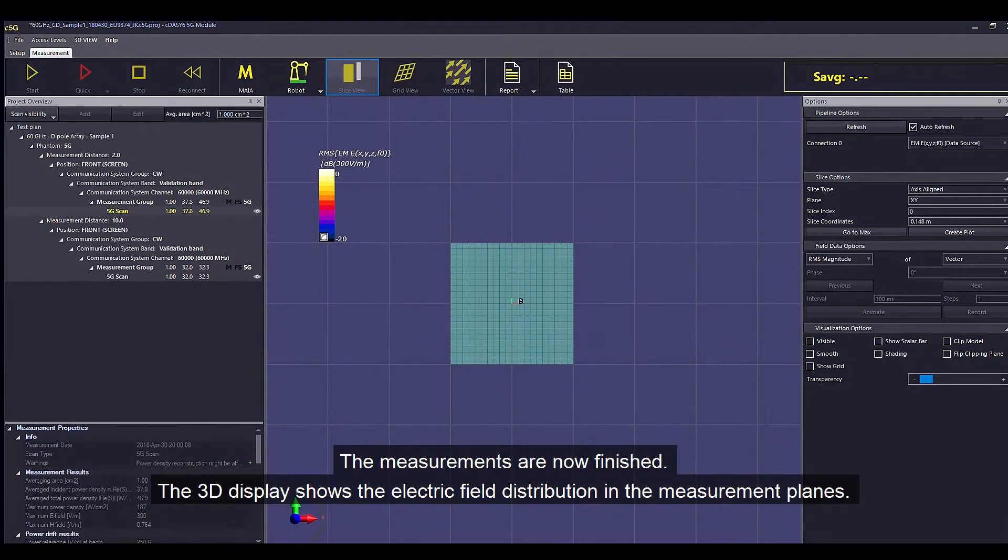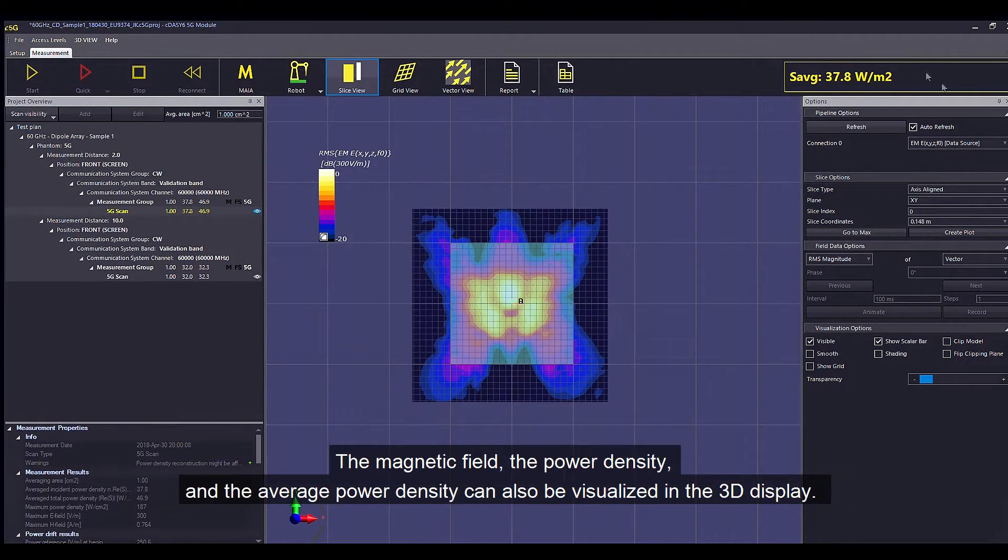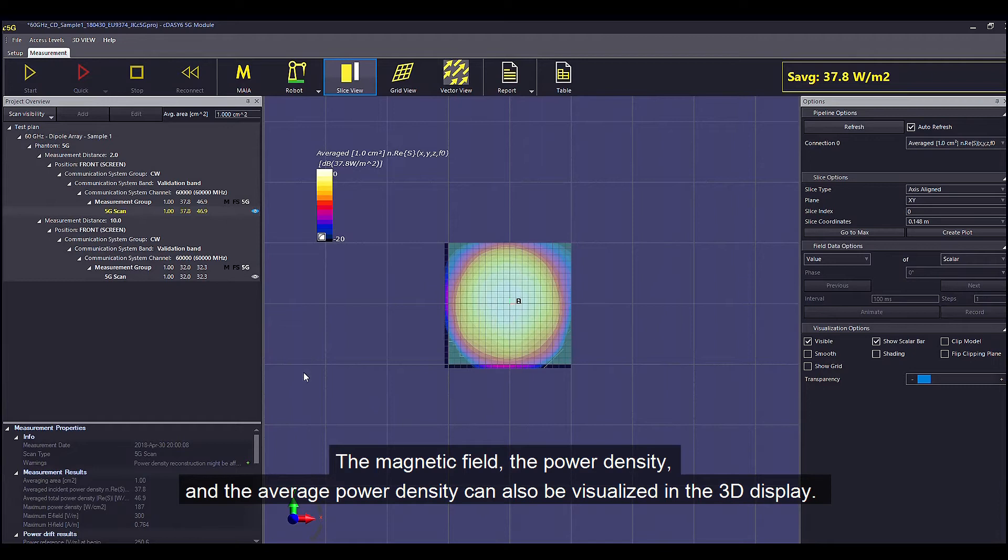The measurements are now finished. The 3D display shows the electric field distribution in the measurement planes. The magnetic field, the power density and the average power density can also be visualized in the 3D display.